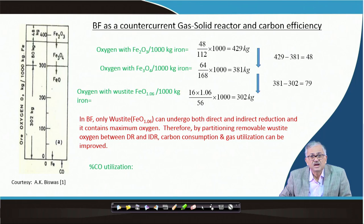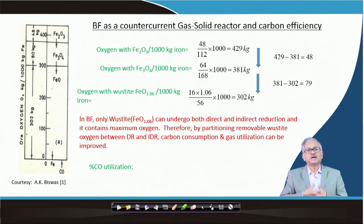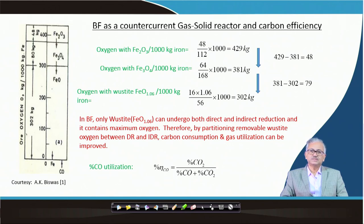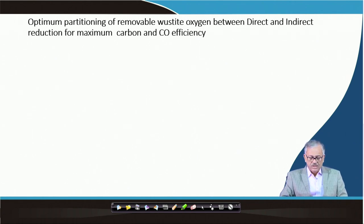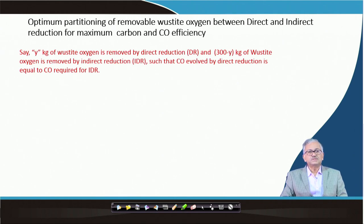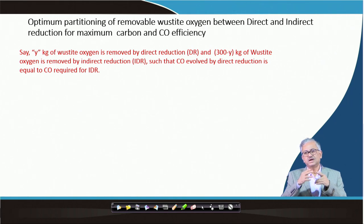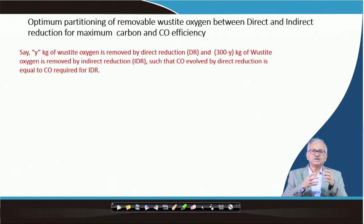Now, the optimum partitioning of removable wustite oxygen between direct and indirect reduction for maximum carbon and CO efficiency: let y kg of wustite oxygen be removed by direct reduction, and 302 − y kg by indirect reduction. We will do this such that the CO generated by direct reduction is just equal to the CO required for indirect reduction. If we do that, that is the maximum efficiency condition.